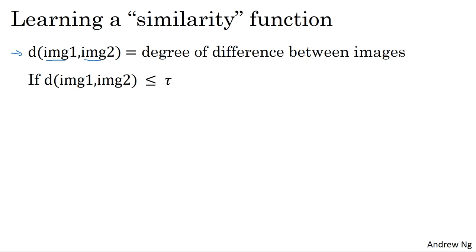So during recognition time, if the degree of difference between them is less than some threshold called tau, which is a hyperparameter, then you would predict that these two pictures are of the same person. And if it's greater than tau, you would predict that these are different persons.